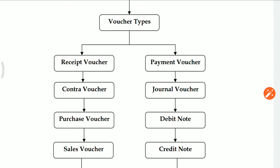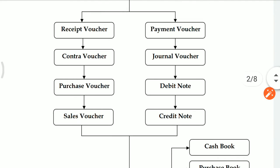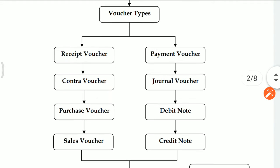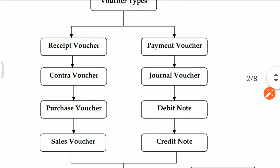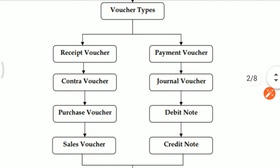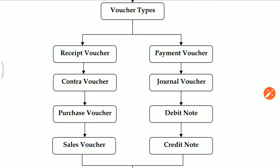Next one is Contra Voucher. In Contra Voucher, either cash or bank account is on the debit side, and bank or cash account is on the credit side. Fund transfer from one bank to another bank — that time Contra Voucher is selected. Please note that in Contra Voucher, cash and bank ledgers only will be reflected. No other fixed asset items, no other liability side item, no other profit and loss items will reflect in Contra Voucher.